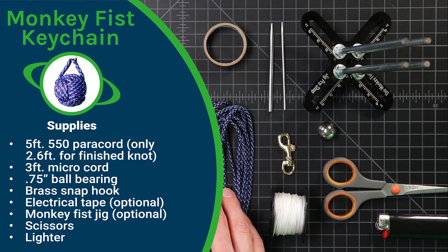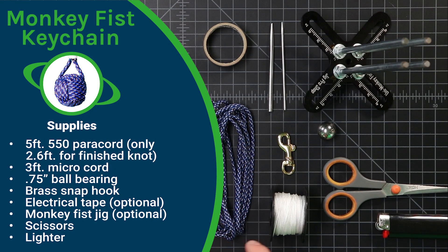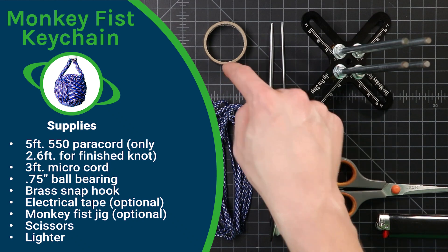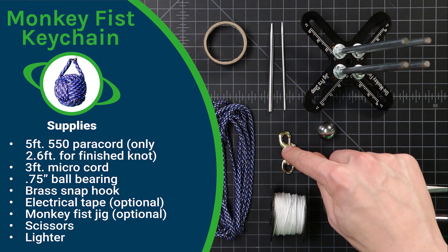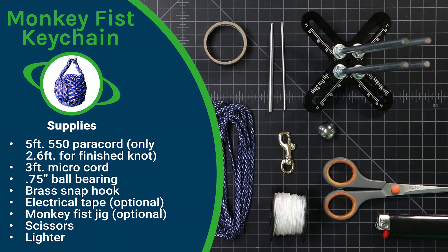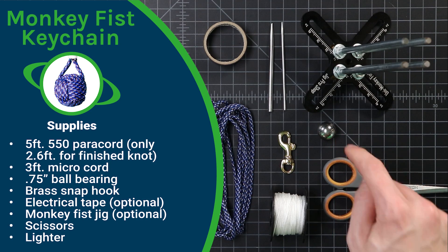So for this project you're going to need some 550 paracord, just a couple feet of that. We also have some micro cord, I'm using white here, and that's just going to wrap around the stem of our keychain. And to keep the cord in place we're going to use some electrical tape. We'll also use a snap hook, I like this brass one, it kind of has a nautical aesthetic to it. And then our ball bearing that we went over.